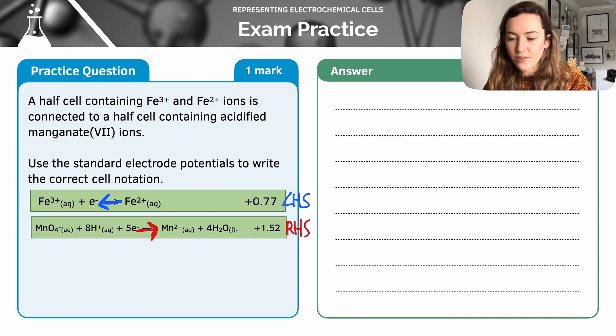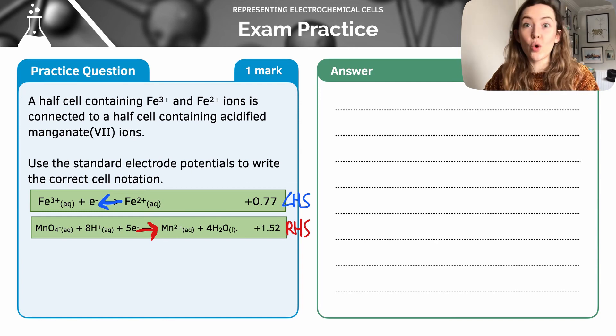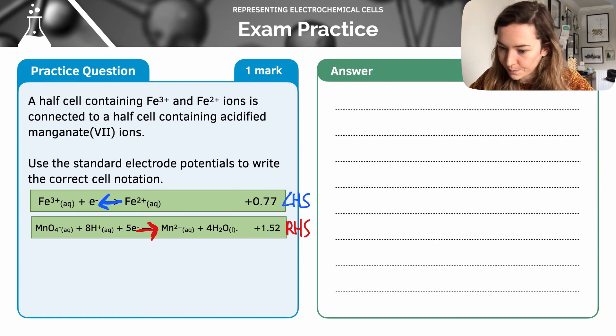There are no solids in either of the half cells. So we're going to have platinum electrodes needed. And so we can show this in our written equation. So we're going to have our platinum there. We're going to have a phase.